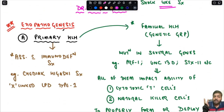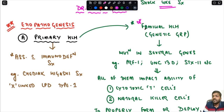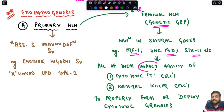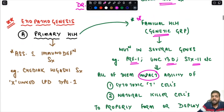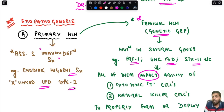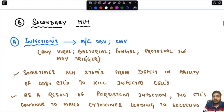Regarding etiopathogenesis, there are two types of HLH: primary and secondary. Primary HLH can occur in two settings. First, as familial HLH — a genetic group — with mutations in several genes like PRF1, UNC13D, STX11, and others. All of these mutations impact the ability of cytotoxic T cells and natural killer cells to properly form or deploy cytotoxic granules.